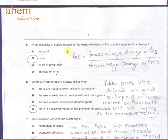In question number five, we are being asked about the price elasticity of supply. We know by the formula that it's percentage change in quantity supplied over percentage change in price. So the answer is price.